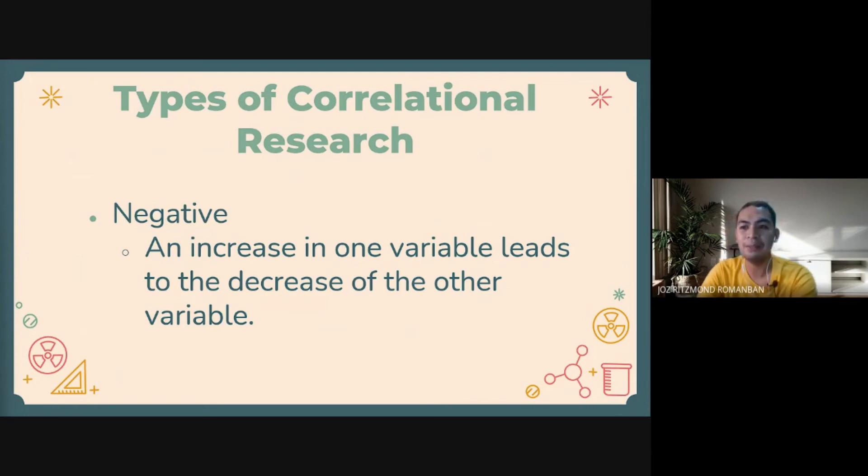If positive correlation pertains to the direct relationship of variables, negative correlation is the complete inverse of that, since it describes the inverse relationship of the two variables. For example, coffee consumption and tiredness. As we increase the intake of coffee, the tiredness decreases.